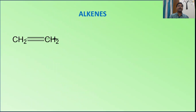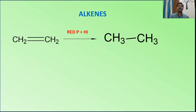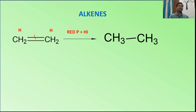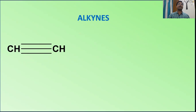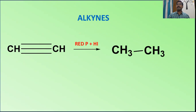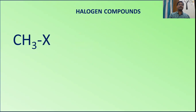Let us see how it happens. When an alkene is treated with red phosphorus and hydrogen iodide, ethylene converts into ethane. The pi bond is broken during the reaction, and two hydrogens are taken. For alkynes, there are two pi bonds — both are broken. When treated with red phosphorus and hydrogen iodide, ethyne gives ethane, requiring four hydrogens, which are produced by this reagent.